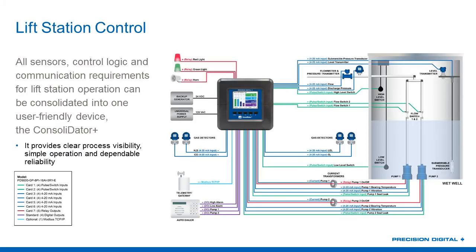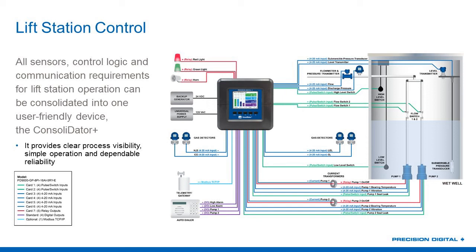To give you an idea of the kinds of complexity that Precision Digital units are capable of as far as controlling your systems, we're going to take a look at this system showing our new Consolidator Plus multi-channel controller. This particular unit is populated so that it's got eight pulse or switch inputs, sixteen 4 to 20 milliamp inputs, five relay outputs, and that comes standard with four digital outputs. We also have the Modbus TCP/IP option on here — our first unit with an Ethernet Modbus capability.